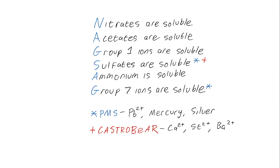NAGSAG stands for: Nitrates are all soluble, Acetates are all soluble, Group 1 ions are all soluble, Sulfates are soluble, Ammonium is soluble, and Group 7 ions are soluble. As you can see, NAGSAG spells out those particular solubility rules.